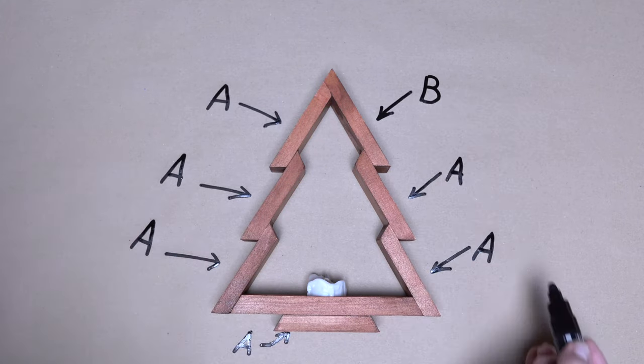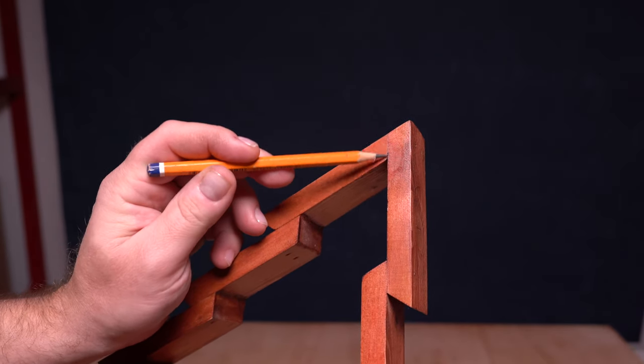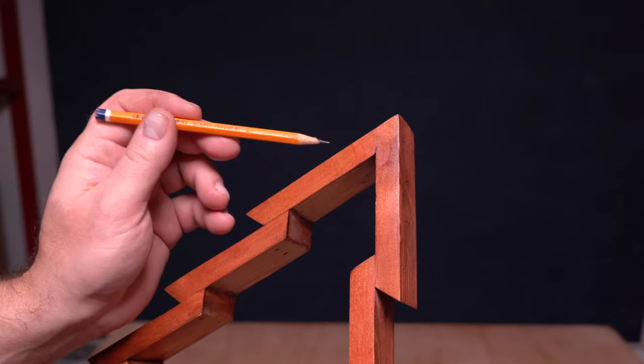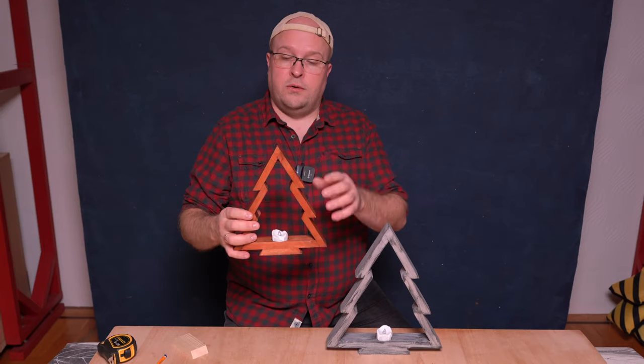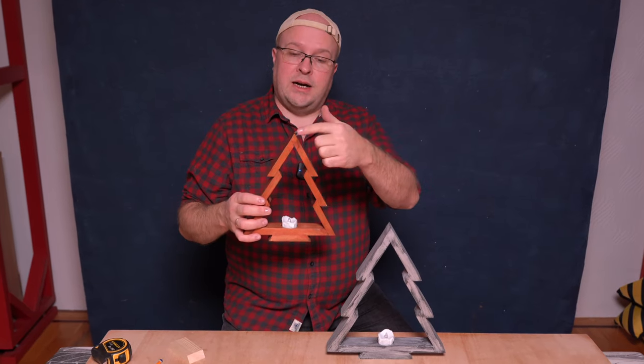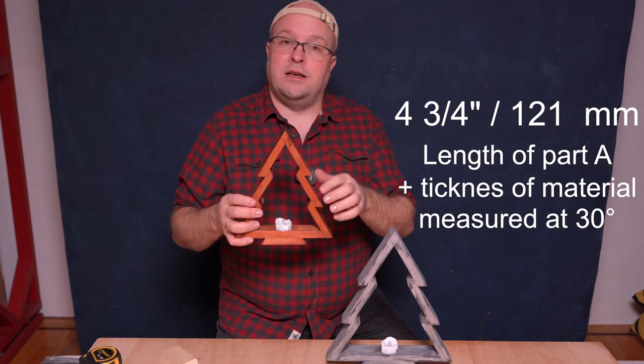To get dimension for part B, just take dimension of part A and add thickness of material. Measure it at 30 degree angle. In my case it is three quarters of an inch. For this tree part B will be four inches and three quarters.